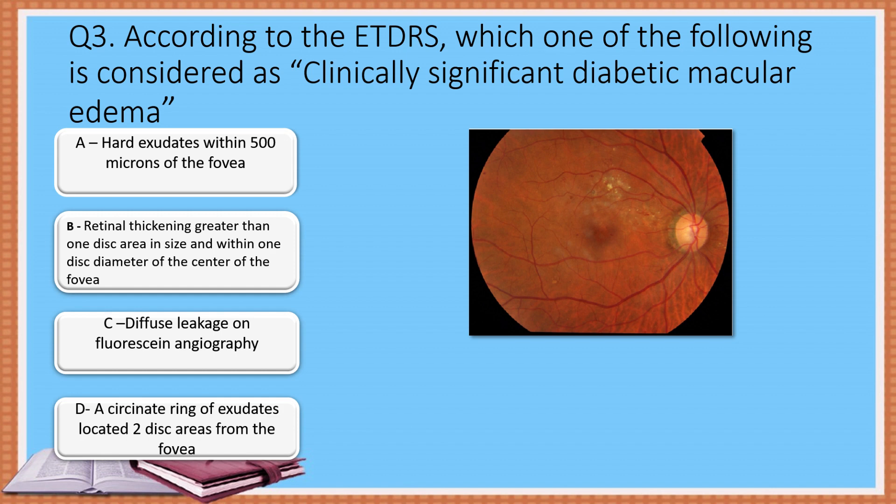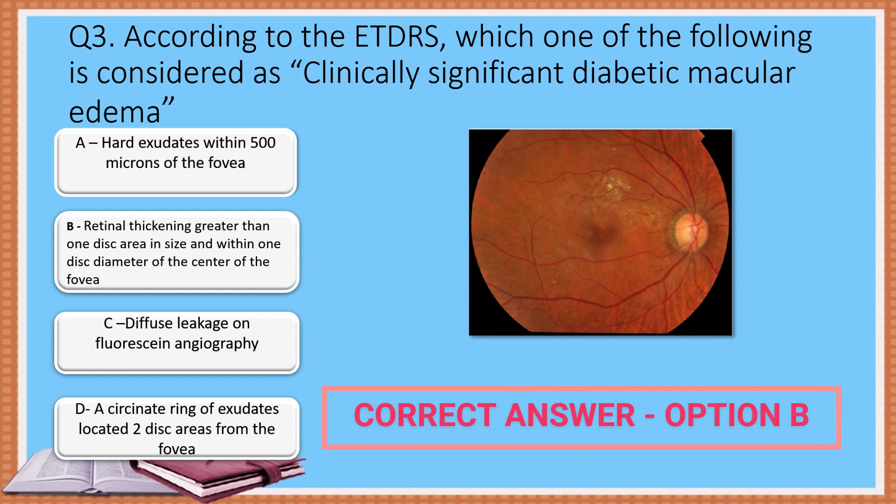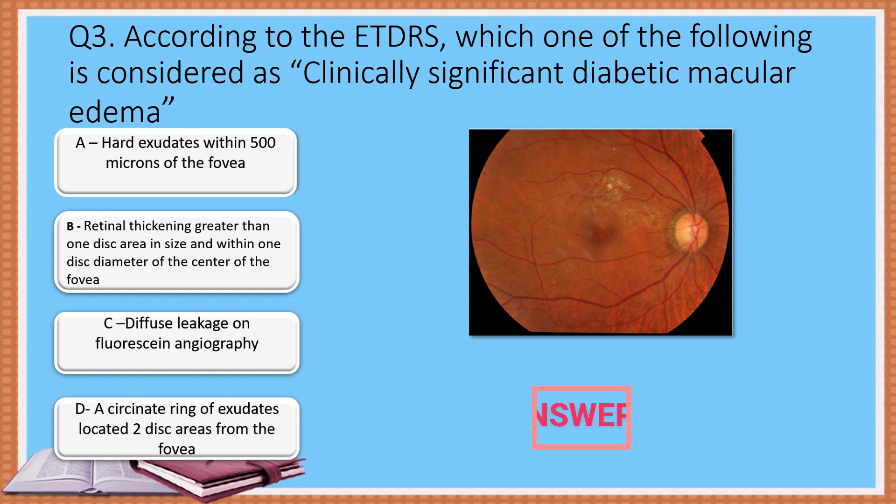Option C: Diffuse leakage on fluorescein angiography. Option D: A circinate ring of exudates located two disc areas from the fovea. The correct answer is Option B: Retinal thickening greater than one disc area in size and within one disc diameter of the center of the fovea.